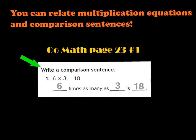I want you to notice that in our sentence, we have some keywords that go along to the equation. Here I have six times as many as three. We have six times three equals, and now for the equal sign, we have the word 'is,' and our answer is 18. So six times three equals 18 becomes: six times as many as three is 18. Now I'm going to show you a model that demonstrates this comparison sentence and this multiplication equation.